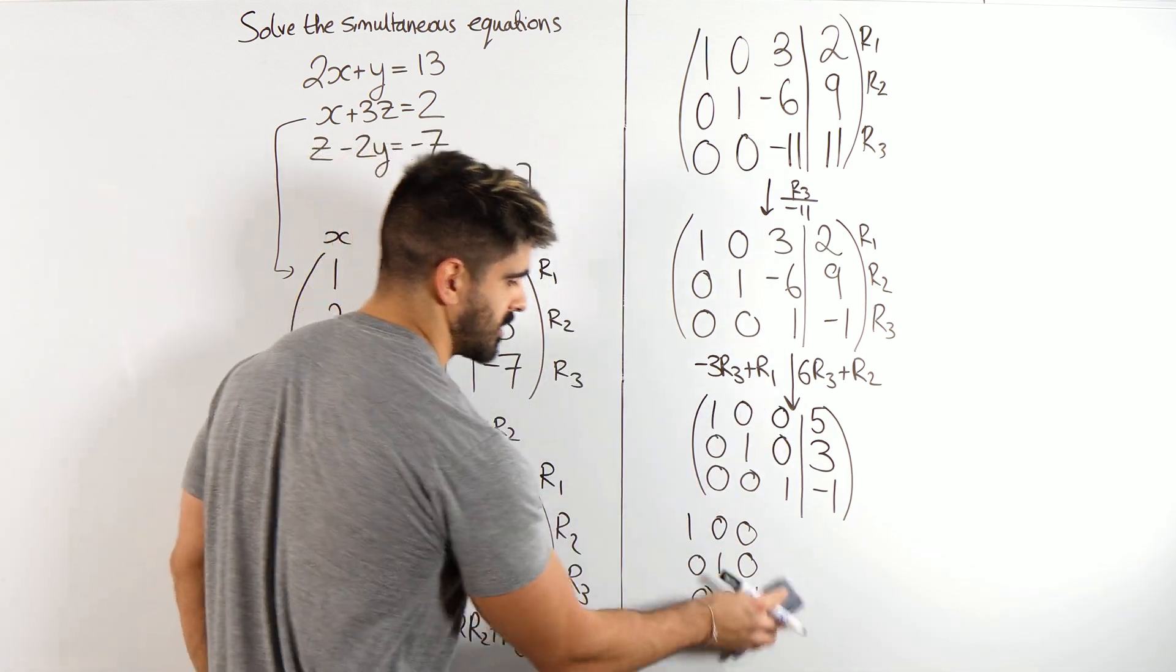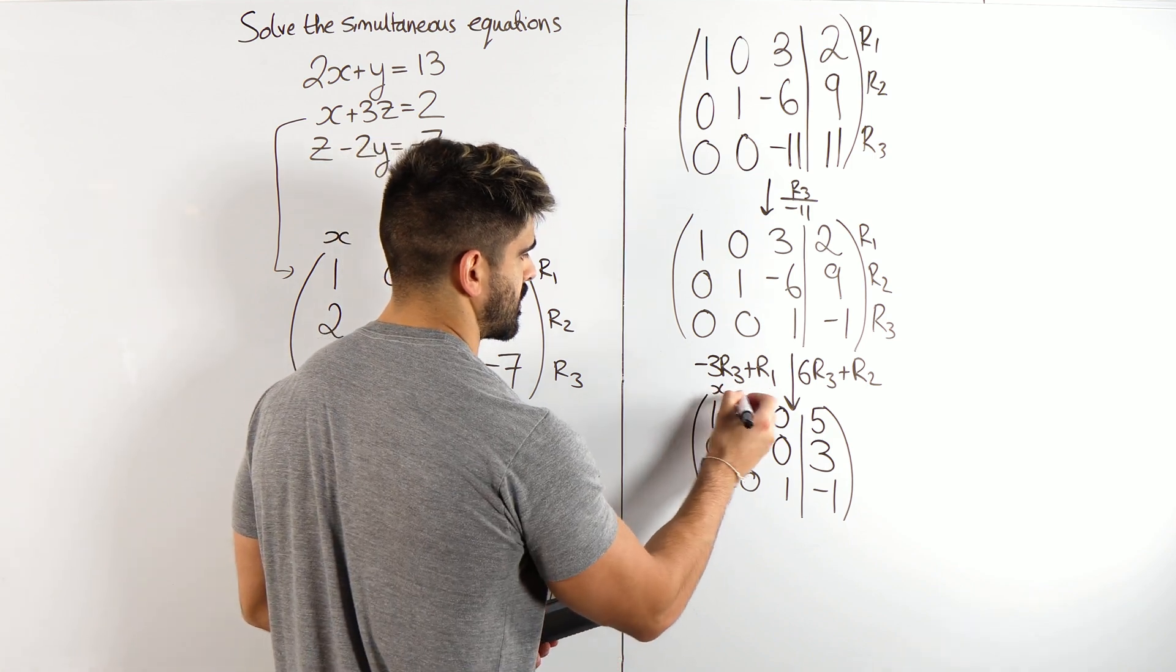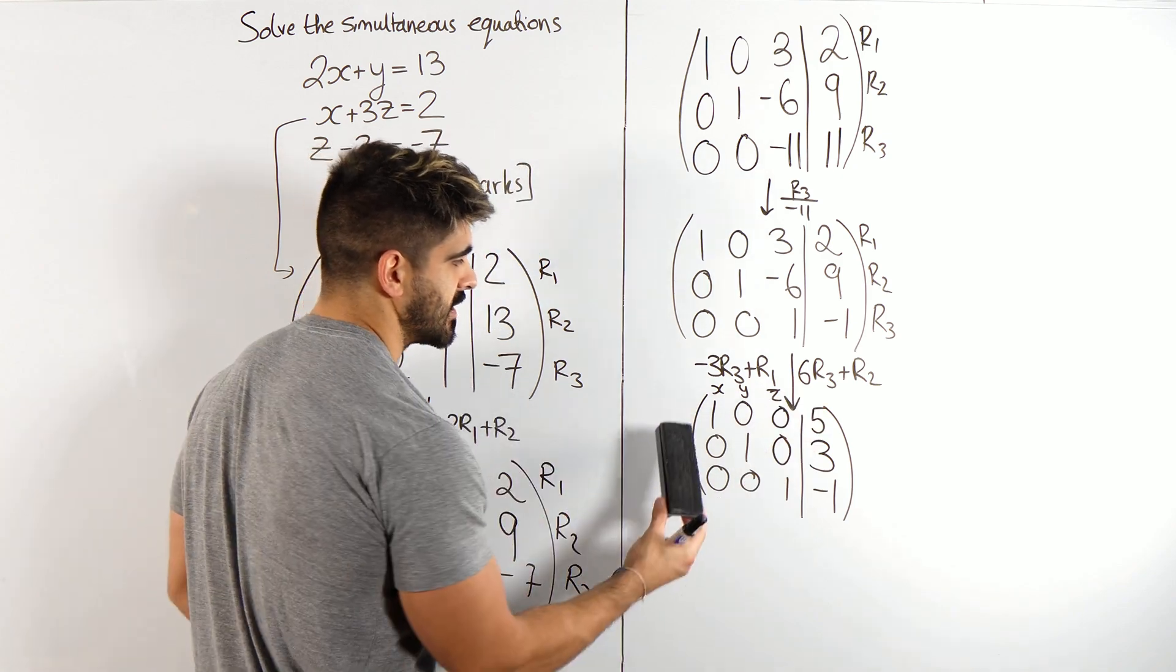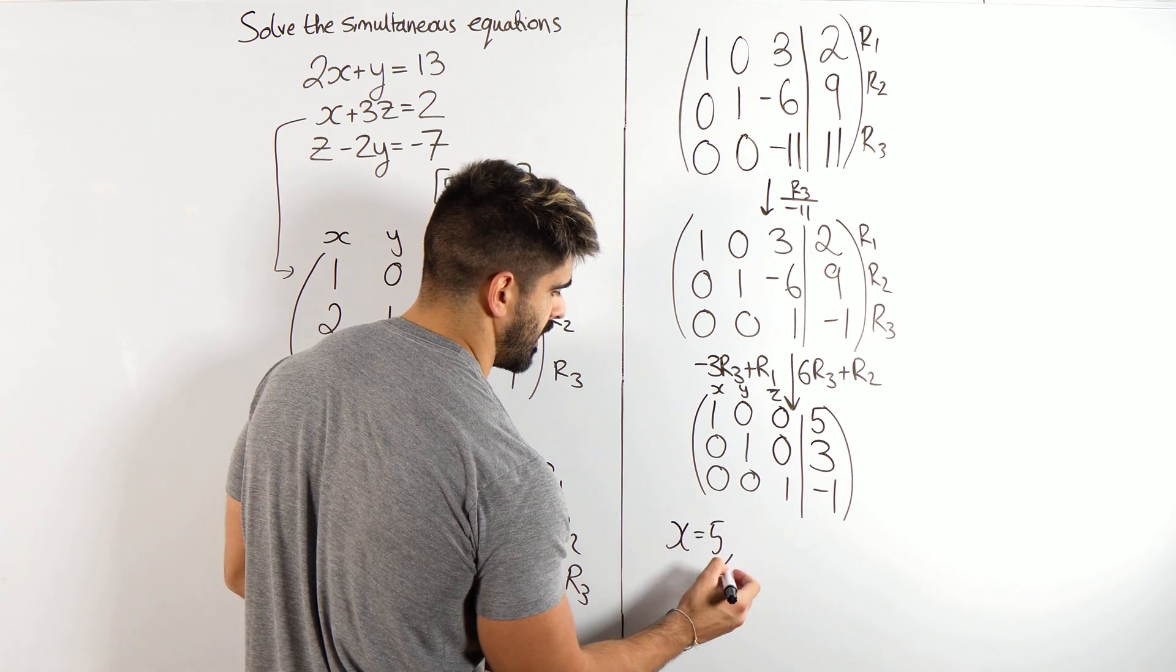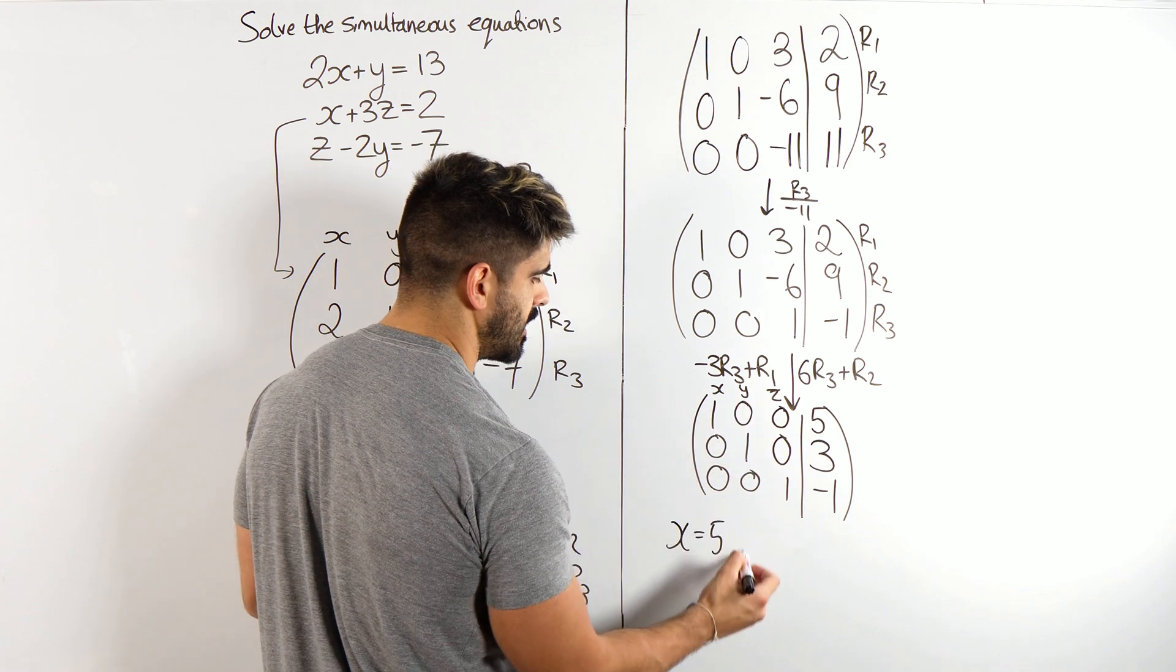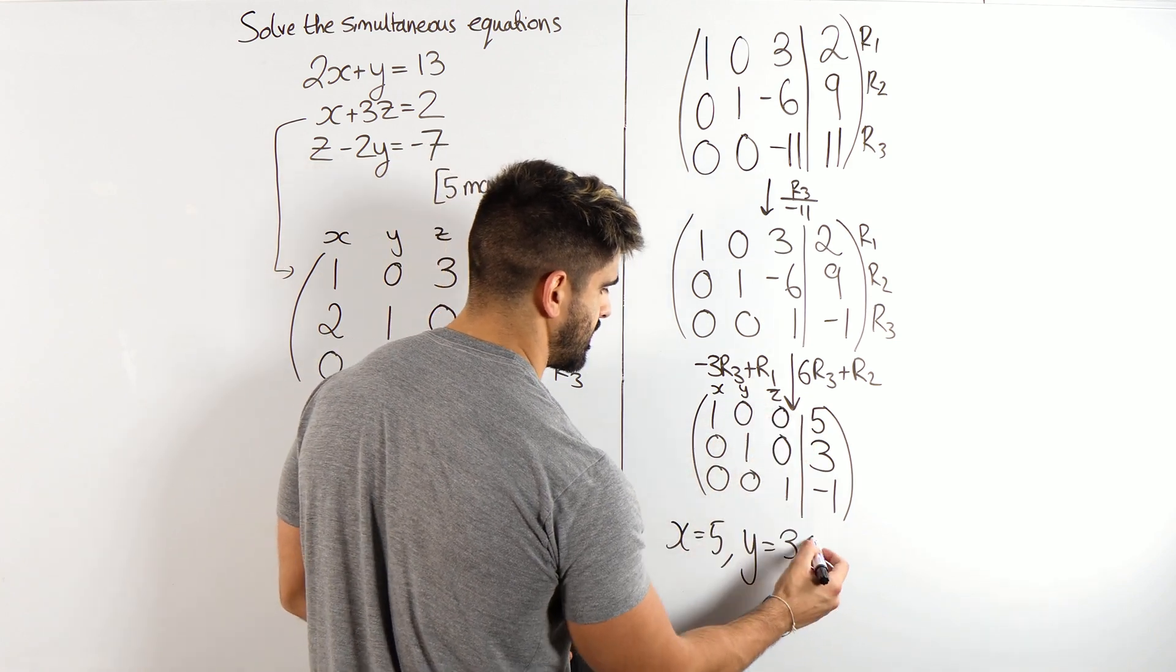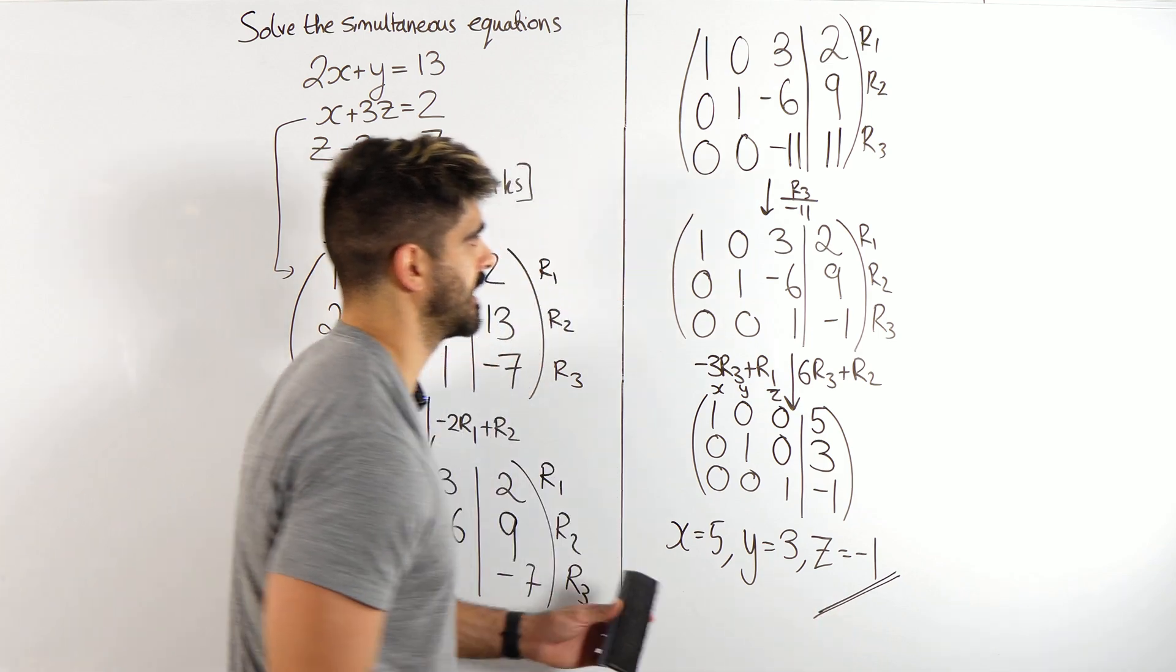There's my identity matrix. Don't forget, guys, this is your x, y, z. So what does the top line say? It's saying 1x is 5. x is 5. This is saying y is 3. And this is saying z is minus 1. And that is our solution.